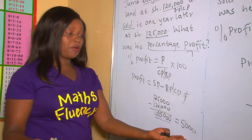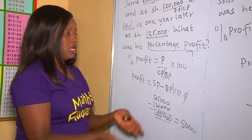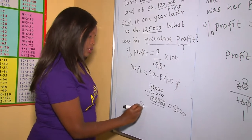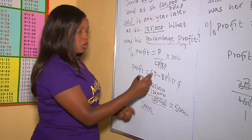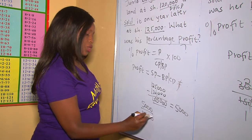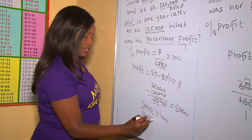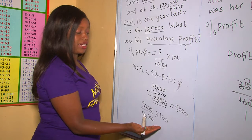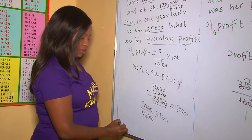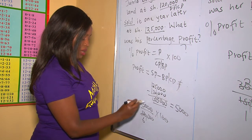Once we get the profit, we proceed to calculating the percentage profit using our formula. Our profit is 5,000 and our cost price is 120,000, multiplied by 100. The two zeros cancel, and then we simplify further by dividing, giving us 25 over 6.